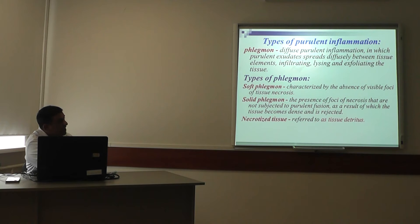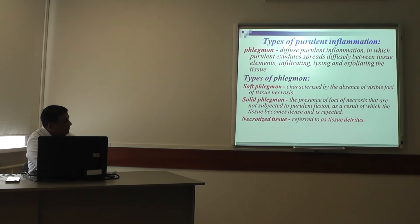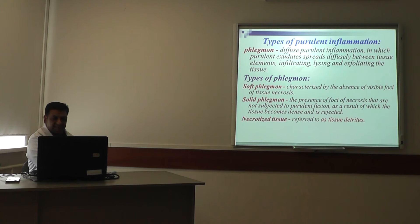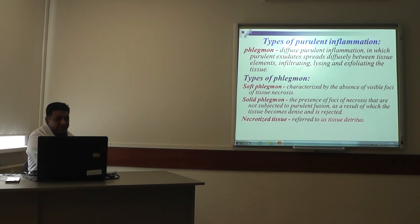Types of purulent inflammation — phlegmon: phlegmon is diffuse purulent inflammation in which purulent exudates spread diffusely between tissue elements, infiltrating and exfoliating the tissue. There are two types: soft phlegmon, characterized by the absence of visible foci of tissue necrosis; and hard phlegmon, characterized by the presence of foci of necrosis that are not subjected to purulent fusion, as a result of which the tissue becomes more dense and hard. The necrotized tissue is referred to as tissue detritus.